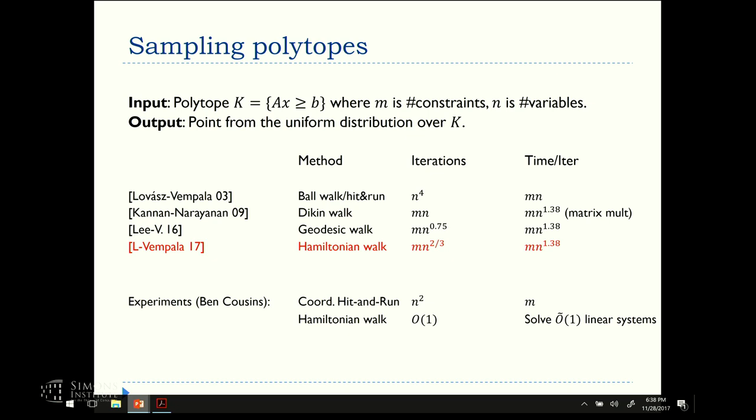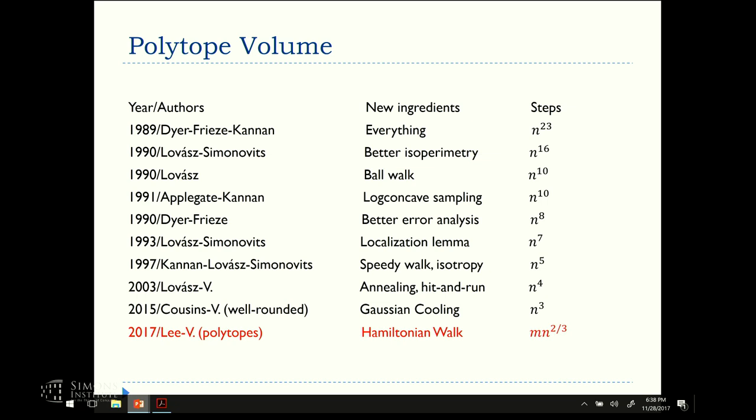One noteworthy application of sampling is volume. So in the general setting, volume or integration, you can do it in N to the four steps. But when we talk about polytopes, again, each step is going to be this matrix multiplication time, and the total complexity of computing the volume is down to MN to the two-thirds. It's the same complexity as sampling. So this, as far as I know, is the first improvement for volume computation, where using polytope structure lets you beat the general case, and quite a bit.